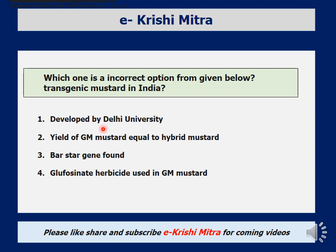Twelfth question: which one is an incorrect option about transgenic mustard in India? GM mustard was developed by Delhi University's Department of Plant Biotechnology around 2016-17. GM mustard is also a hybrid, and its yield is actually about 20–30% more than normal varieties, not merely equal to hybrid mustard. The bar-barnase-barstar gene system is used, with the bar gene derived from Streptomyces hygroscopicus, conferring herbicide tolerance. So the incorrect option is that the yield of GM mustard is equal to hybrid mustard.